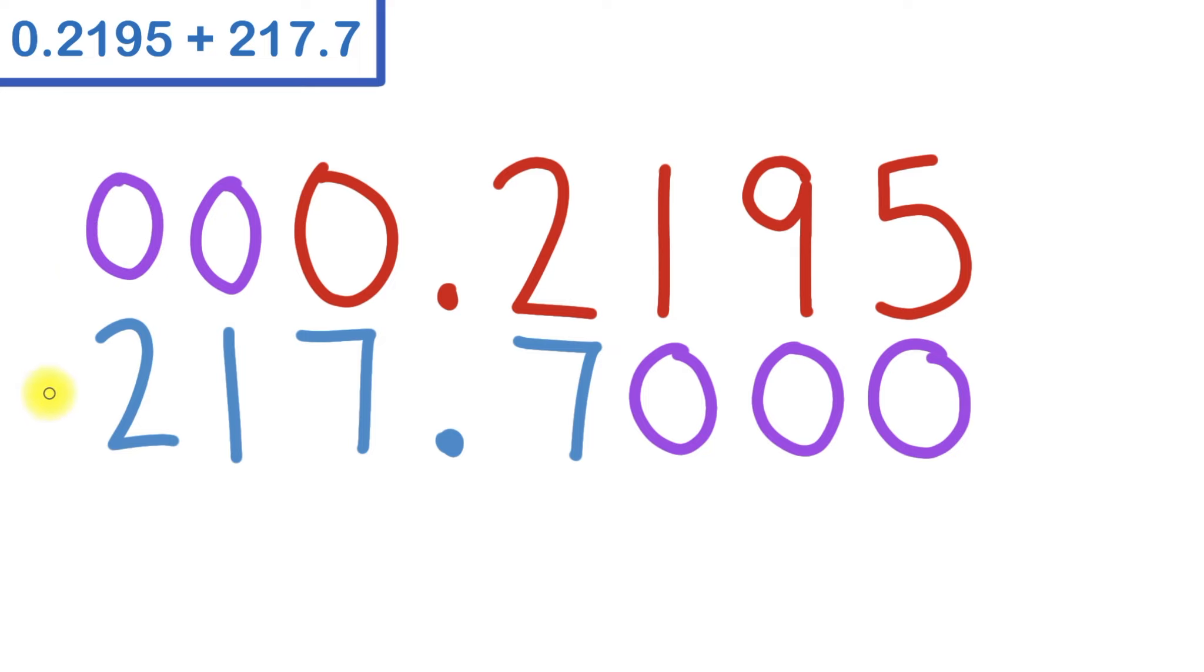And finally, I'll put my addition symbol, underline everything, and get to work. And just a brief reminder, the reason why we're lining up our decimal point is because what happens when we do that is we end up lining up each of our place values.